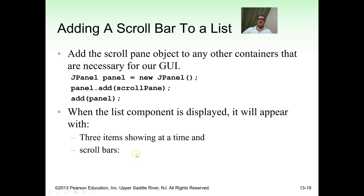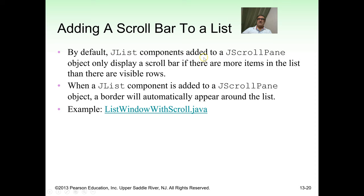By default, JList components added to a JScrollPane only display a scrollbar if there are more items than visible rows. When a JList is added to a JScrollPane, a border will automatically appear around the list. Examples for each chapter will be uploaded to the Learning Management System of the university.